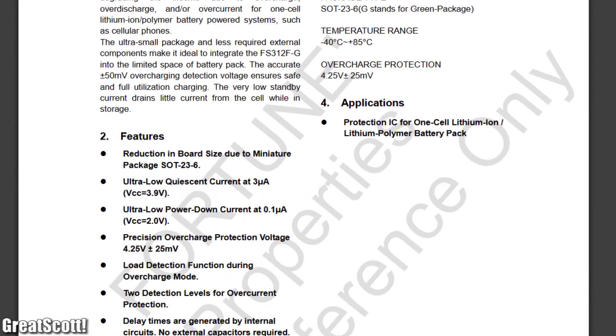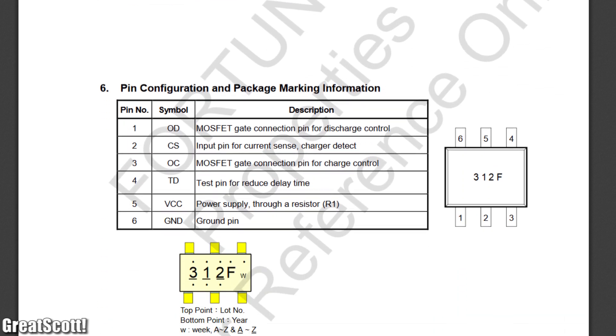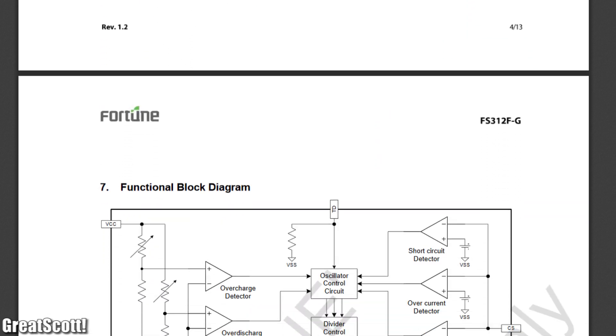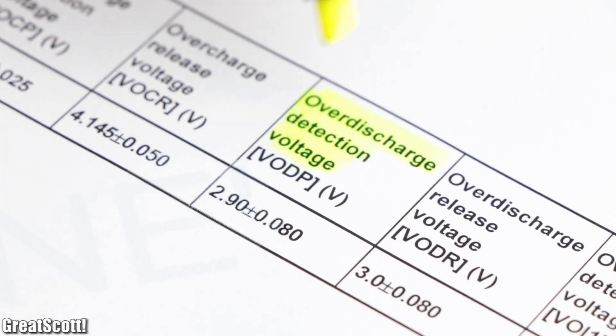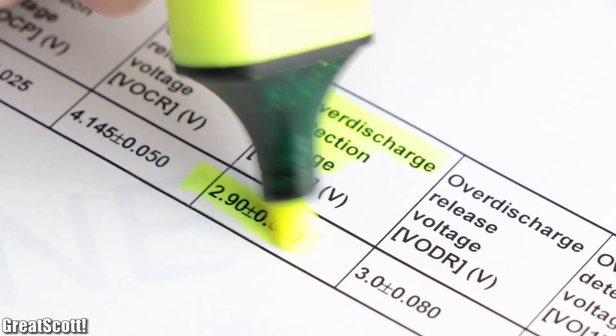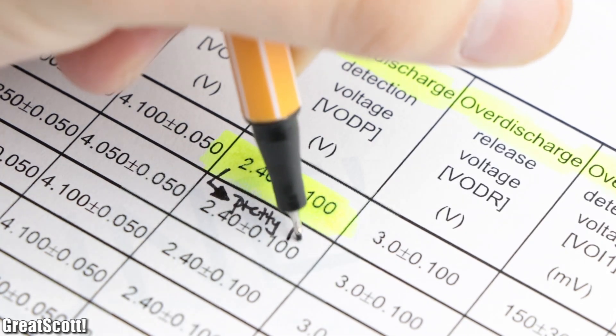Once again the datasheets of the old and new protection ICs are pretty similar, but the difference which led me to this IC is the higher over discharge protection voltage of 2.9 volts instead of the old 2.4 volts, which is pretty low for a LiPo battery.